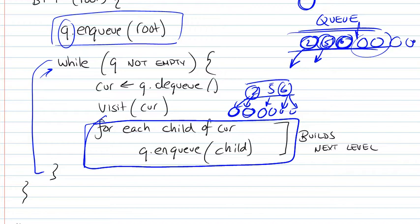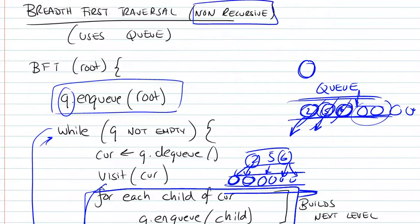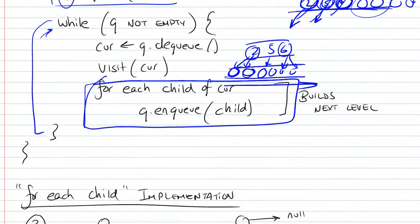So in the end, when we've dealt with 2, 5, and 6, we're going to be dealing with their children in this order—in level order. Their children might have children of their own, so in the end, we're visiting the levels one by one. So this is a BFT.